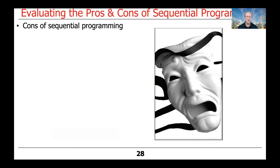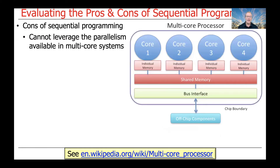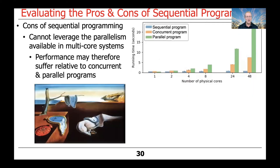Not everything is unicorns and rainbows, so there are also some cons of sequential programming. Most importantly, you can't leverage the parallelism available in modern multi-core systems where you have lots of cores at your disposal. As a consequence, the performance of a sequential program may suffer relative to an equivalent concurrent and/or parallel program. With more cores, you can take advantage of parallel and concurrent techniques to get better throughput, better scalability, and lower latency.